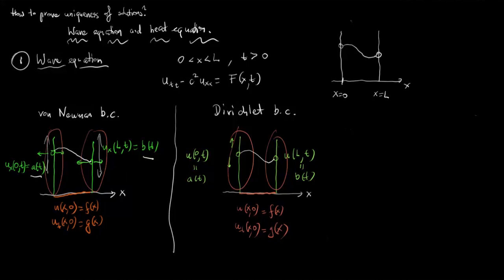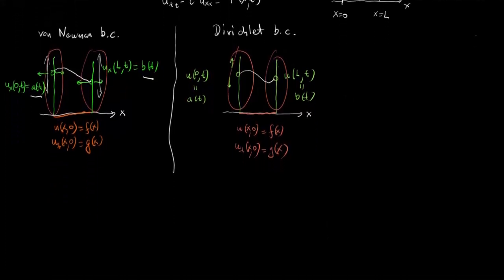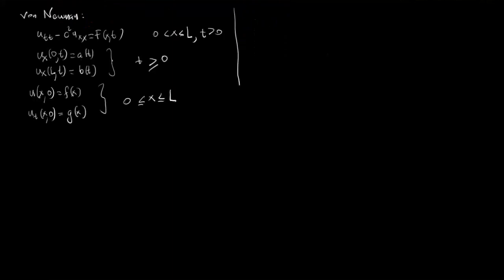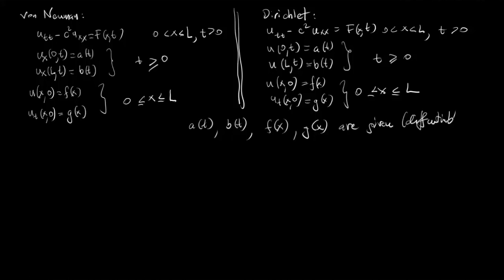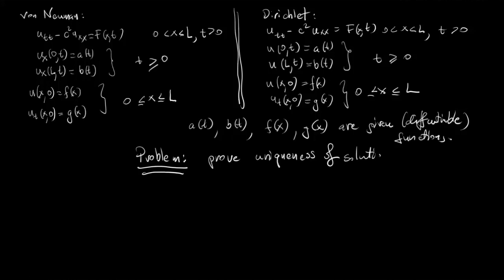Let us write this down in terms of equations. In the von Neumann case we have the x-derivative conditions, whereas in the Dirichlet case we have the amplitude conditions. Here a(t), b(t), f(x), and g(x) are given differentiable functions. Today we will be trying to prove the uniqueness of solutions to either problem (a) or problem (b).